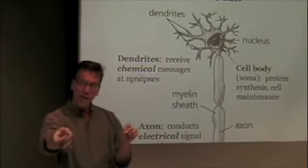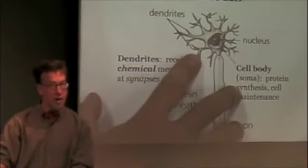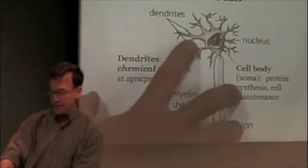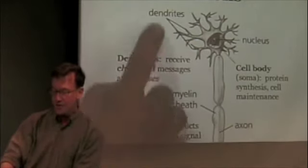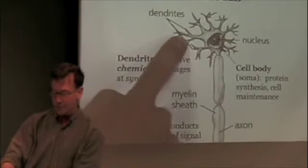And then it's going to influence the function of the next neuron generally at the dendrites. Now, so the dendrites are sort of receiving chemical messages at synapses.